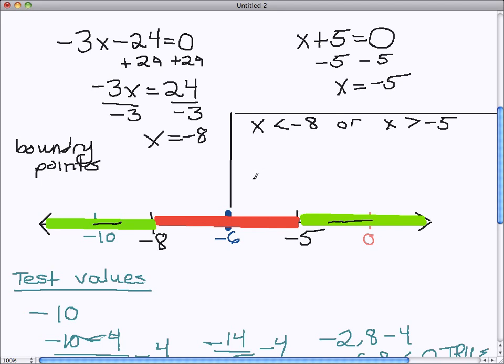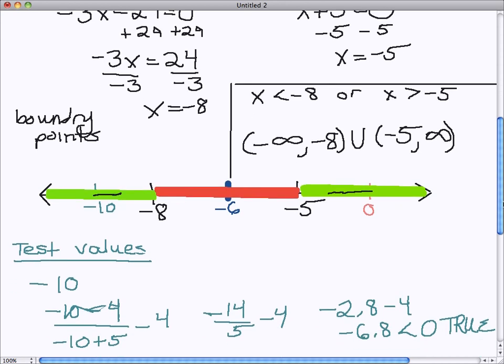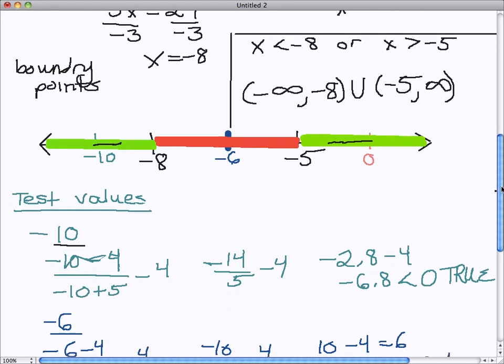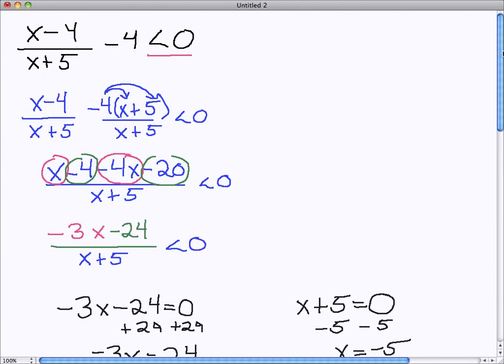Or you could write any value, any number from negative infinity to negative 8, or any value from negative 5 to infinity. Those are going to be values that are going to work. How you decide to write your solution using method 1 or method 2 is completely up to you. Just be sure you have clearly indicated your solution and don't leave it as just which test values are true and which are false. We do want to indicate how the regions come in. Because we don't want to just say negative 10 is a solution. We want to indicate that it's any number less than negative 8. So you do want some indication whether it's method 1 or method 2 is your choice as long as we have a final indication as to which regions are going to give us a solution to our original rational inequality.